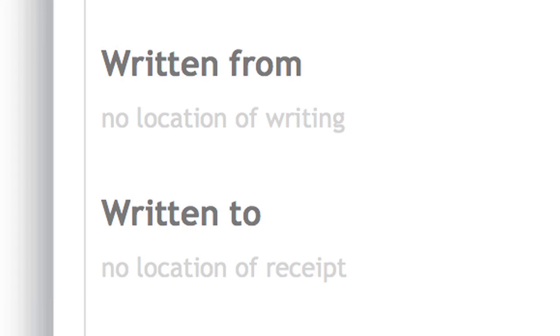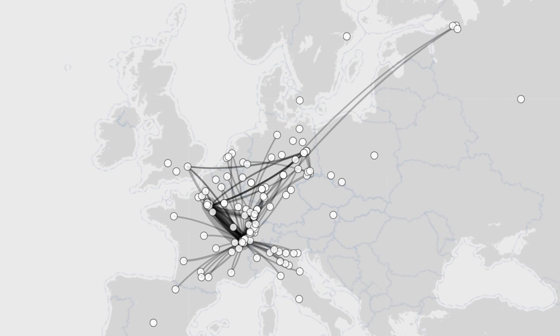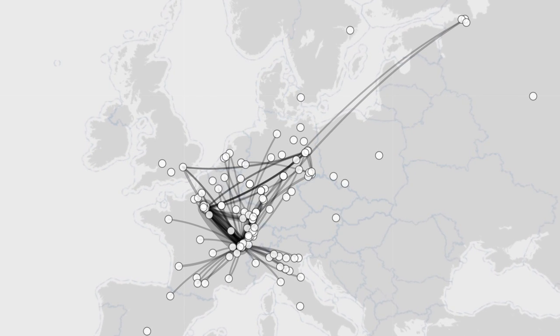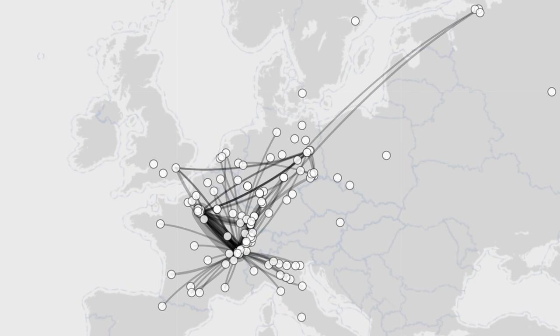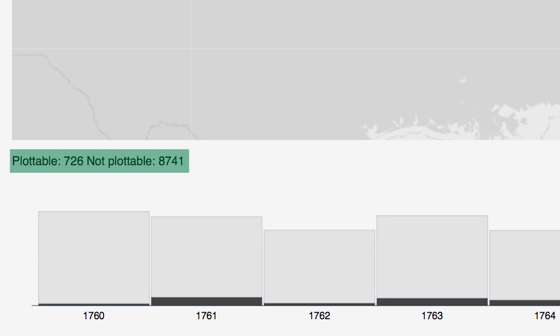Not only do we not have all the location points for Voltaire's correspondence, we've also probably lost half the letters, and we don't even really know that for sure or where we already lost them. So we're dealing with a very incomplete, ambiguous data set, and trying to approach this kind of data with a cliometric mentality really doesn't make sense.